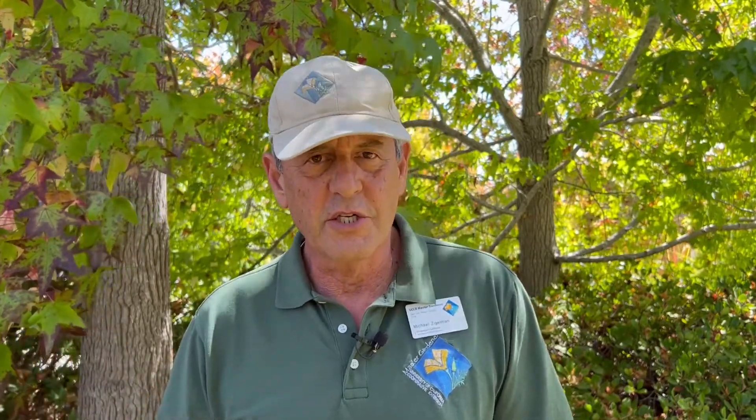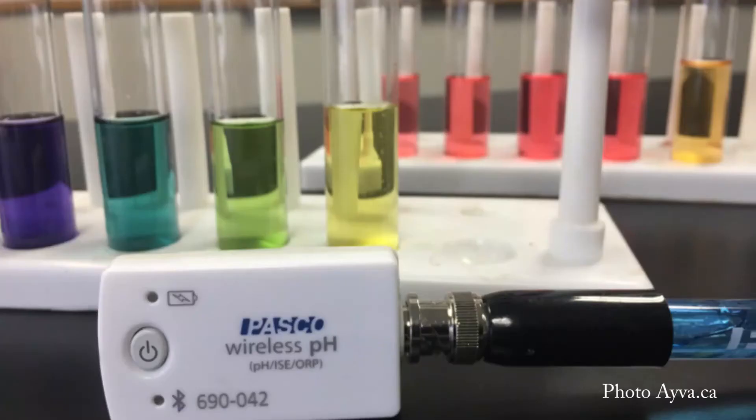So what kind of things will a soil test tell us? It'll tell us something about the structure of our soil — the mineral structure. It can also tell us about the chemistry of our soil, which includes things like the pH, the acidity or alkalinity of the soil, and possibly some of our nutrients.